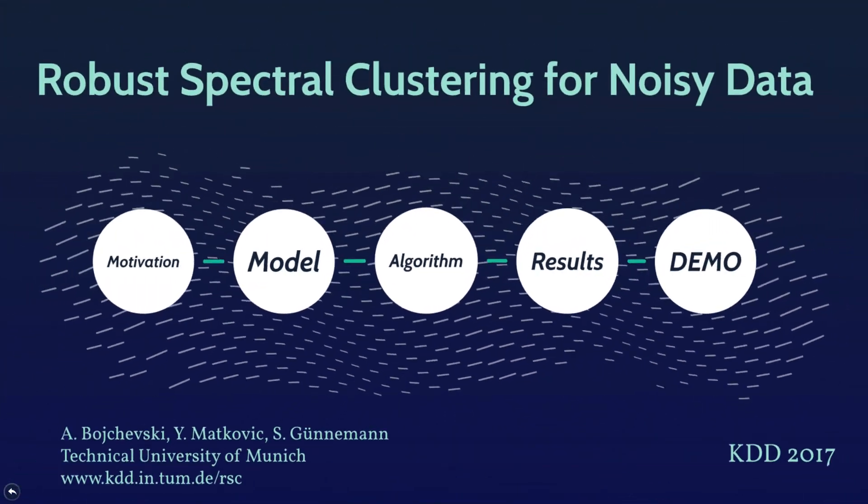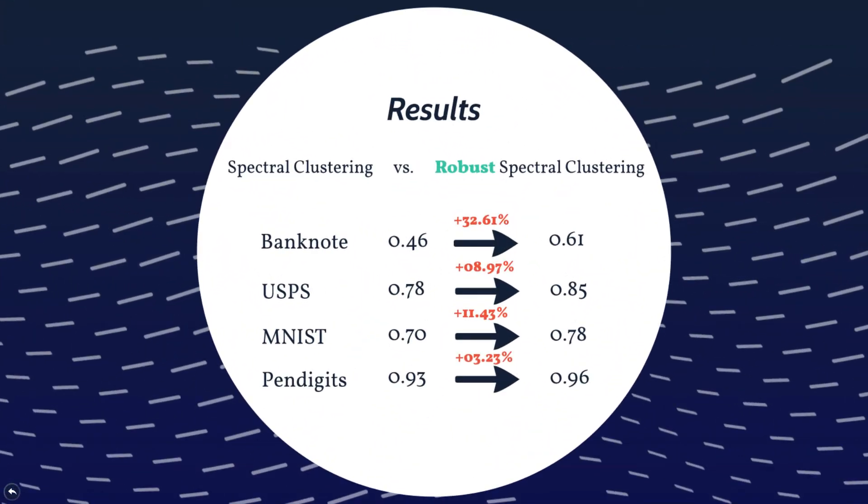Using our approach, we are able to get up to 32% improvement in the clustering performance compared to spectral clustering as measured by the NMI score.